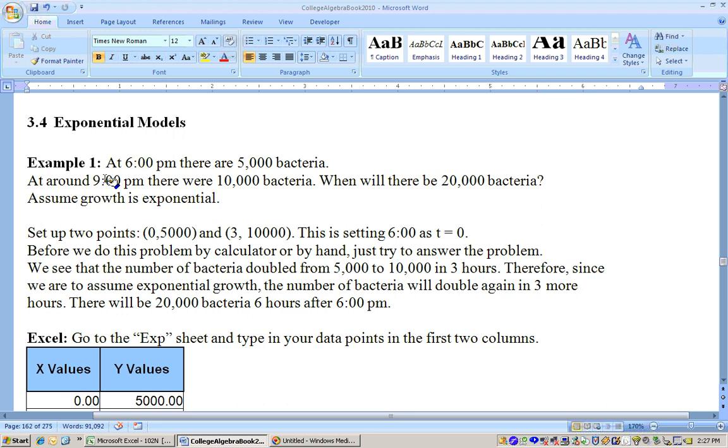In this section we're going to do exponential models. Example one says at 6 o'clock there are 5,000 bacteria, and at 9 o'clock there is 10,000 bacteria. The question is, when will there be 20,000 bacteria? And we're assuming exponential growth.